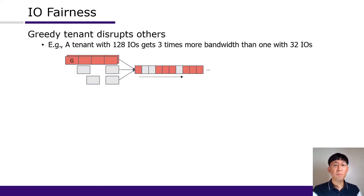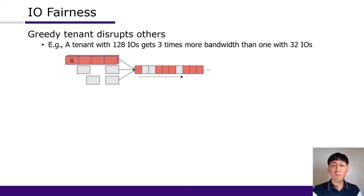Fairness is always a big issue in multi-tenancy, and SSD is no exception. A tenant with more outstanding IOs easily takes more bandwidth. For example, a tenant with 128 outstanding IOs gets three times higher bandwidth than one with only 32 outstanding IOs in our experiment. Unfortunately, the unique performance characteristics of SSD make this even worse.